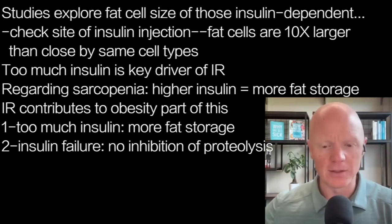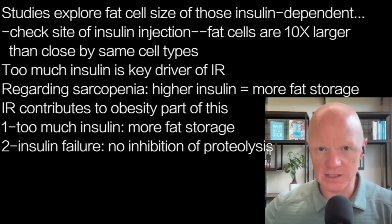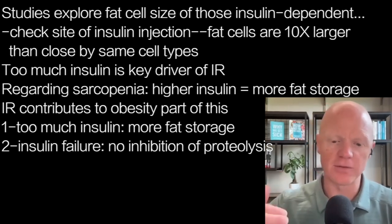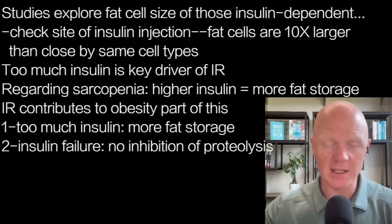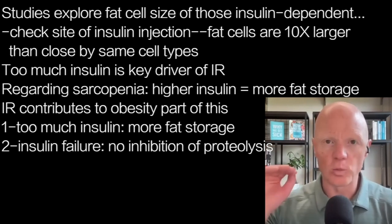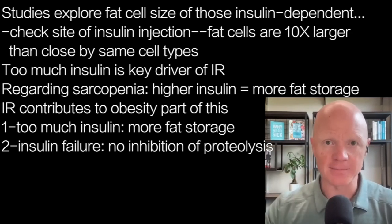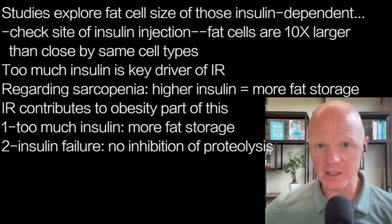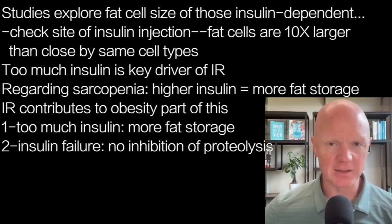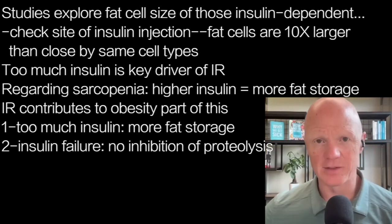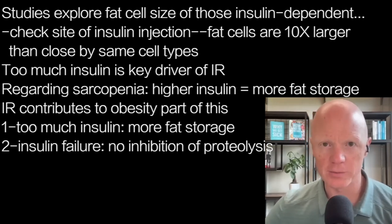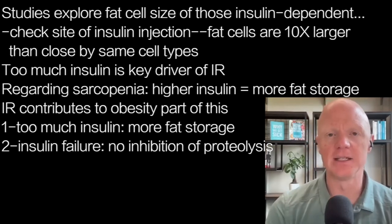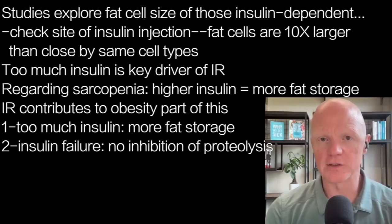As a reminder, even in a diabetic, too much insulin is a key driver of insulin resistance — partly because of what's happening at the fat cell. Insofar as we're talking about sarcopenic obesity, the higher insulin gets, the more the body wants to store energy as fat. So insulin resistance contributes to the obesity part of this through elevated insulin, whereas sarcopenia and altered muscle protein status is a result of the failure of insulin to work.